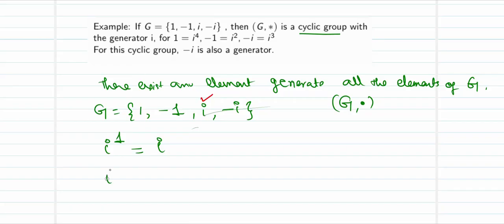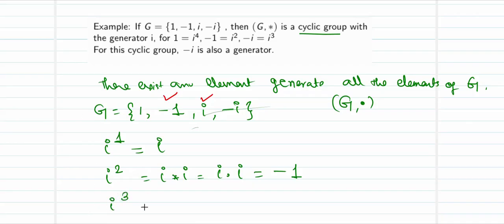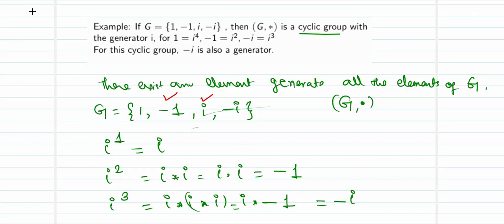When we take i^2, that is i binary operated with i — i × i = i² = -1, so the element -1 gets generated. For i^3 = i × i × i: i² = -1, and -1 × i = -i, so the element -i also gets generated.